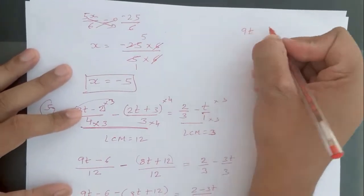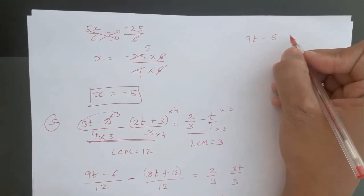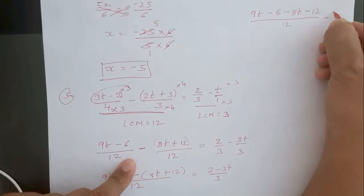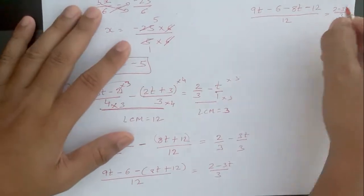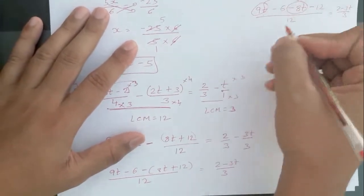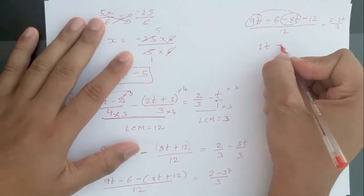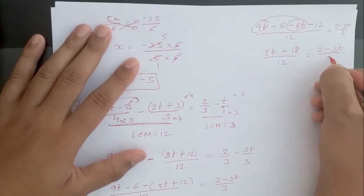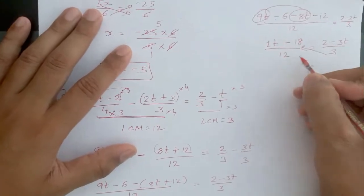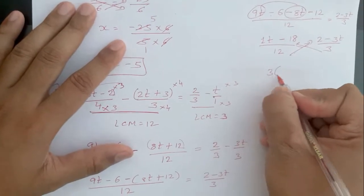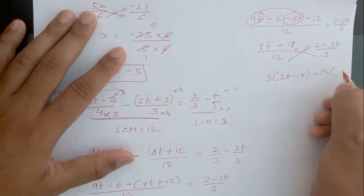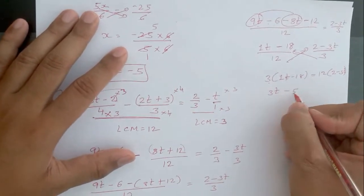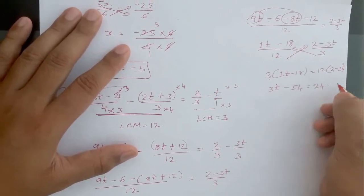Then here, 9 minus 6 gives us constants. Now 9 minus 8t — wait, the variable terms: minus 8t will be 1t, and the constants: minus 6, minus 12 gives minus, but the sign changes to plus, so 12 plus 6 will be 18 upon 12. Now after opening the bracket, we get: 1t minus 18 upon 12 is equal to 2 minus 3t upon 3. Then this 3 is going to transpose to the LHS side and this 12 is going to transpose to the RHS side. So 3 is going to multiply with this number and 12 is going to multiply with the bracket. So 3 into 1 will be 3t, and 18 times 3 is 54 upon 12, and 12 times 2 is 24 and 12 times 3 is 36t.